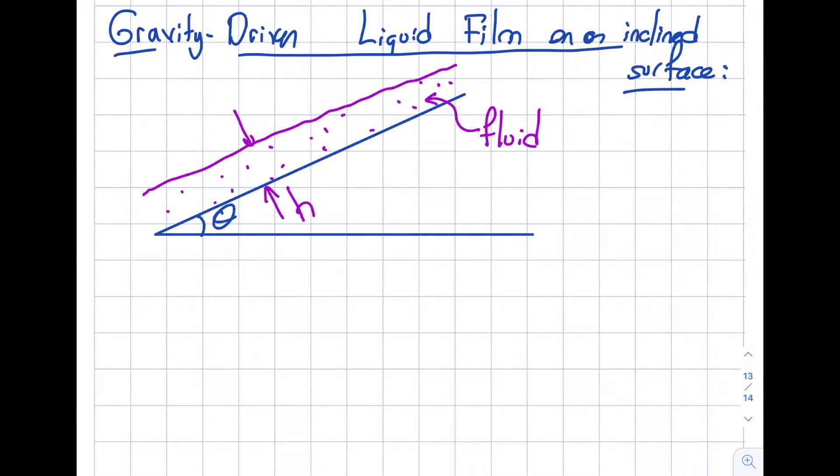So what's going on over here is I have an inclined surface and I have a constant height flow like this. It's a liquid film flowing down over here.